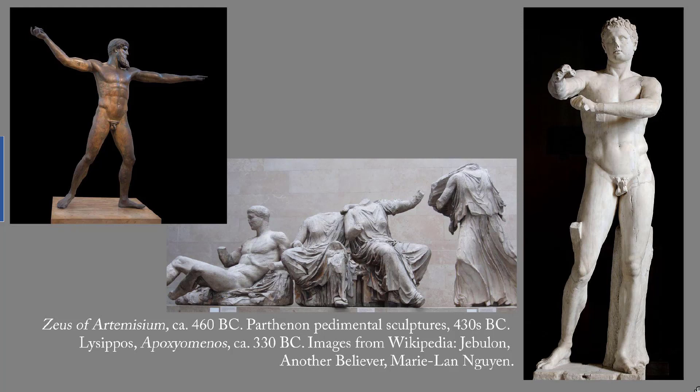These are three characteristic examples of classical Greek sculpture. The major difference between the Archaic Period, which I talked about last week, and the Classical Period, is that in the Classical Period the human body is treated as an organic whole, not a collection of well-studied parts.